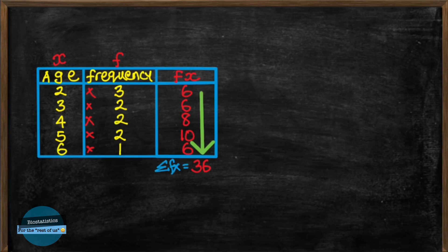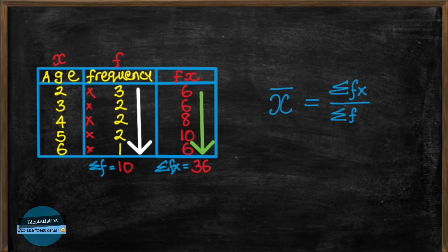And we can also add all the frequencies together here to get summation f. So you can see how simple it is to effect this formula using the table. Sigma f of x, which is 36, divided by sigma f, which is 10. And thus we get 3.6 years. Easy peasy, lemon squeezy.